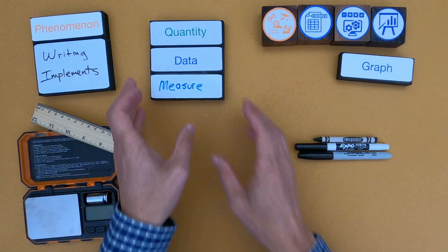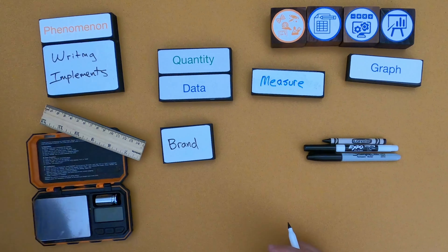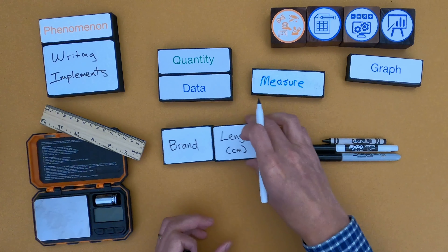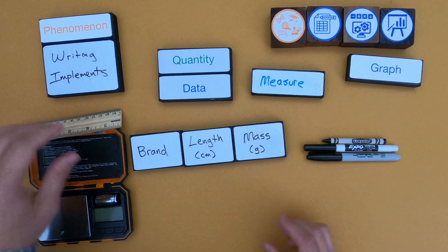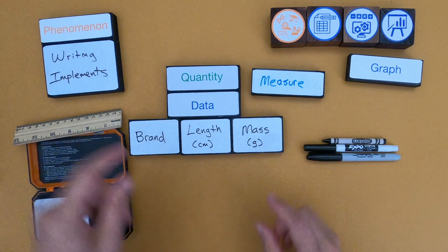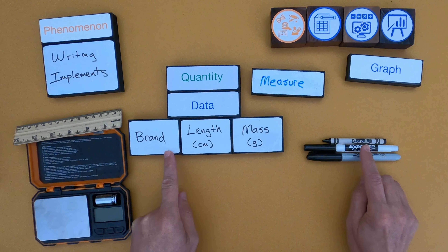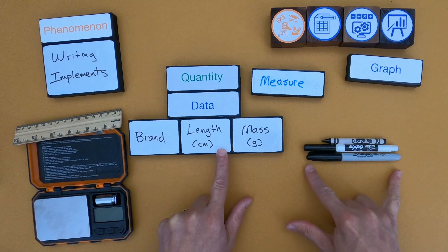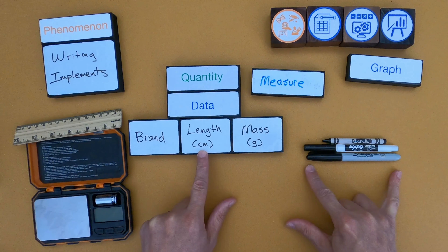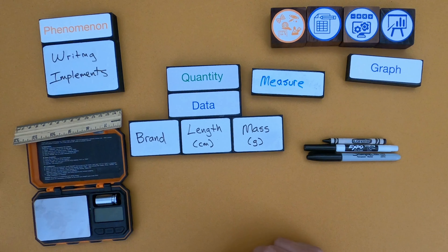As I collect my data, I've set up the first column to be the brand — so it's going to be the brand, for example Expo. Next I have the length, which is how long it is; I put the units underneath, so I'm measuring in centimeters. And then the mass, which I'm going to measure in grams.